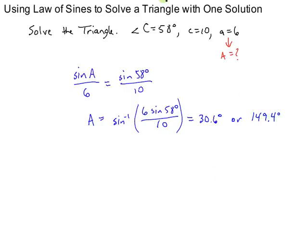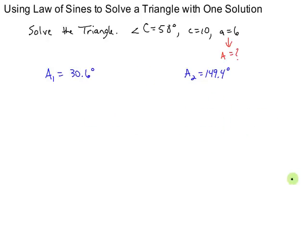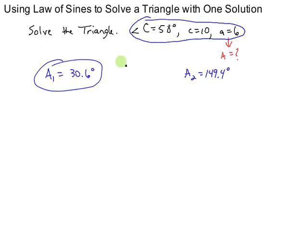So why don't we name this angle A sub 1 and this angle A sub 2. And at this point, we have two possibilities for our triangle. I could have these three pieces of information that were given along with this angle, or I could have these three along with this angle. And I would solve each of these based on A1 or A2. But there is a problem.